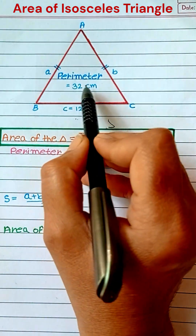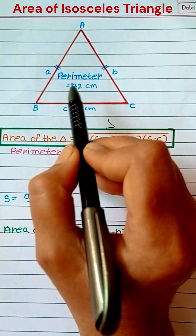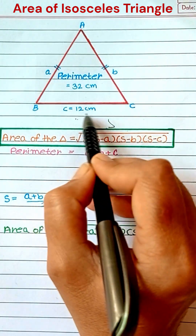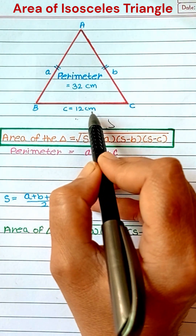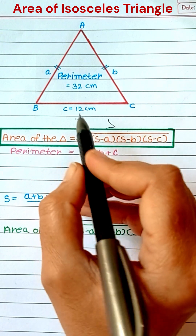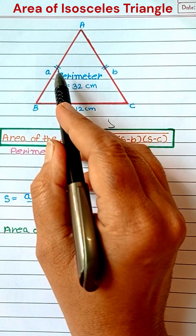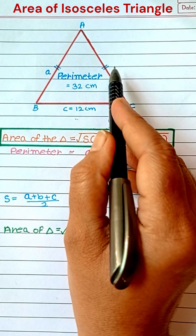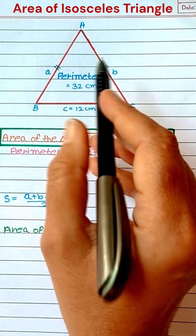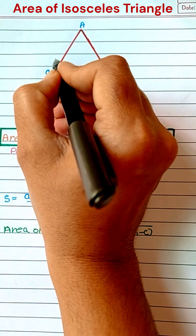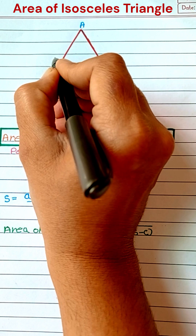Find the area of a triangle where the perimeter is 32 cm and the base is 12 cm. Both equal sides are not given, so let us assume both sides are x cm.